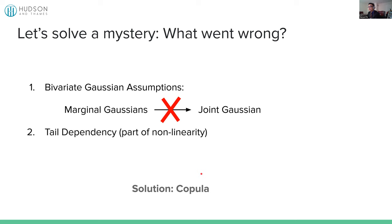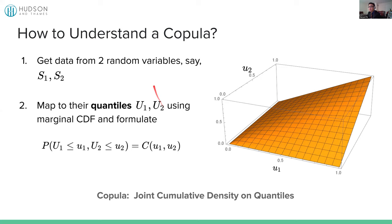Copula is very good at modeling tail dependencies, and that's one of the reasons copula was initially created in the 1940s and 50s to model those kinds of behaviors. The solution is to use copula, and we're going to apply copula for pairs trading. But first, let's understand the mathematical concept. In Latin, copula means 'link' — like chains link together. So first, let's get data from two random variables S1 and S2 — think of those as stock prices or returns.